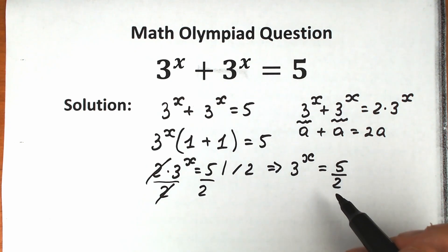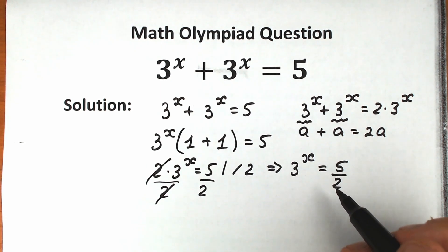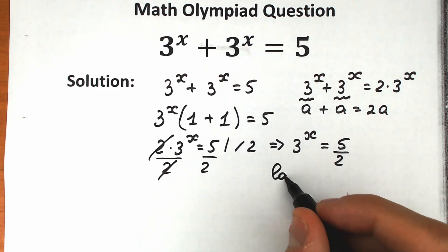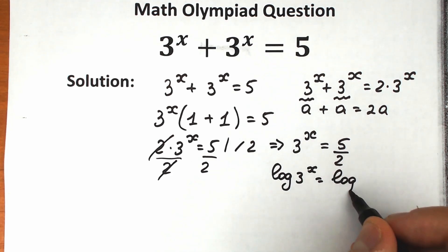This equation, how can we solve it? Of course, according to log, we can easily solve this. Let's take log on both sides. So let's apply log on both sides. So we have log 3 to the x equal to log 5 over 2.